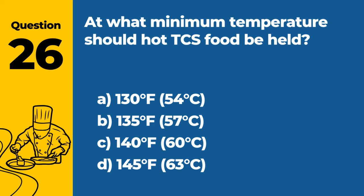Question 32: Define potentially hazardous food in terms of food safety. A. Foods that require time and temperature control to prevent pathogen growth. B. Foods that are high in protein and low in carbohydrates. C. Non-perishable foods that can be stored at room temperature. D. Foods that contain only plant-based ingredients. Answer: A. Foods that require time and temperature control to prevent pathogen growth. Potentially hazardous foods are those that require proper time and temperature control to prevent the growth of pathogens or the formation of toxins.